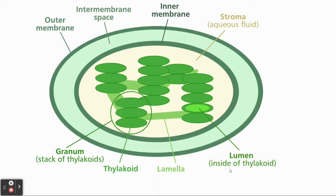We're going to start by reviewing what the chloroplast is. This big green structure that you see here is the chloroplast. It has an outer membrane and an inner membrane right here, and a membrane space right here.